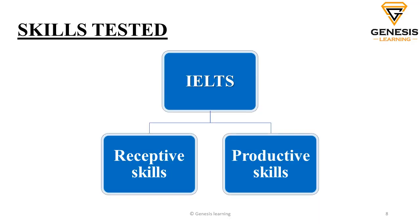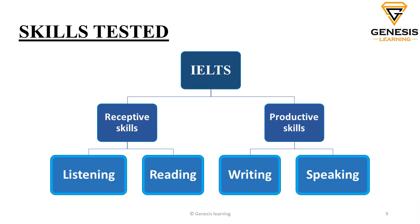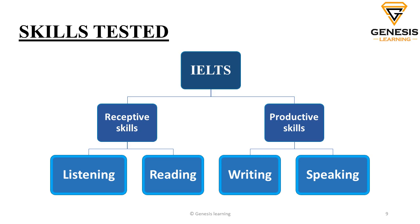The IELTS basically tests two skills. One is your receptive skill and the other is your productive skill. Receptive skill means how much you can understand or receive of the English language, and they test it through listening and reading. When you talk about productive skills — how much you can give out in the English language — they test it through writing and speaking. So you've got receptive: listening and reading; and productive: writing and speaking. Now let's start with the first module, which is the listening.